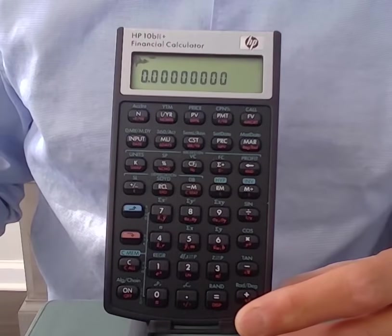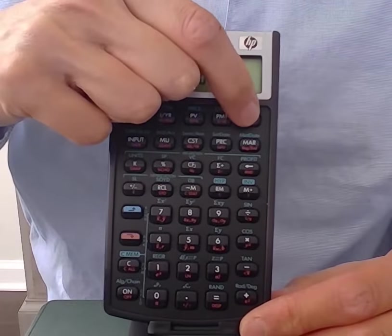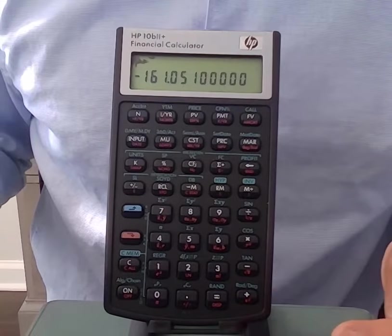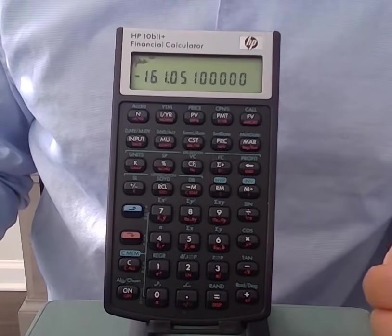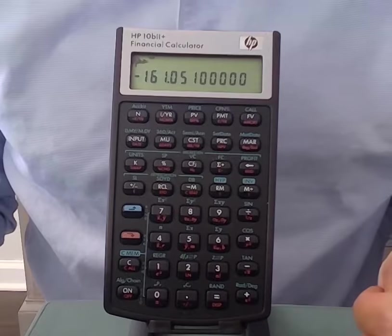And then finally, we're ready to solve for the future value. And I simply press the button of what I want to solve for, which is FV. When I press FV, I see that the future value is $161.05 with a negative sign in front of it.